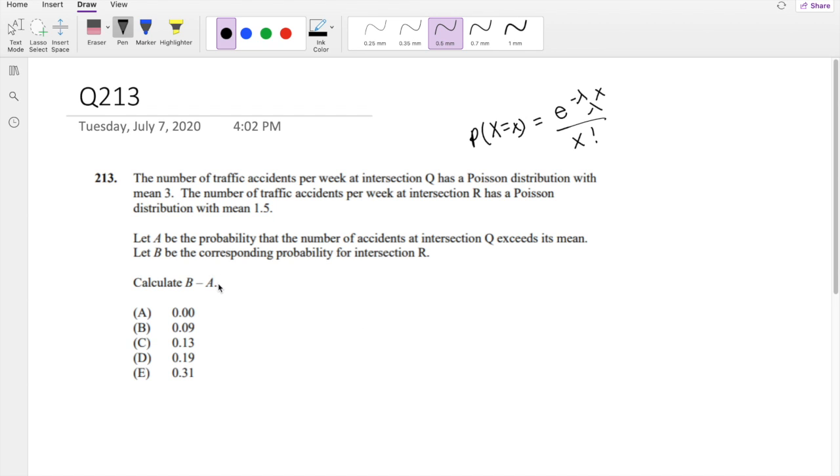Let A be the probability that the number of accidents at intersection Q exceeds its mean. At intersection Q, the mean is 3. So probability of A is defined as the probability that x is greater than 3.